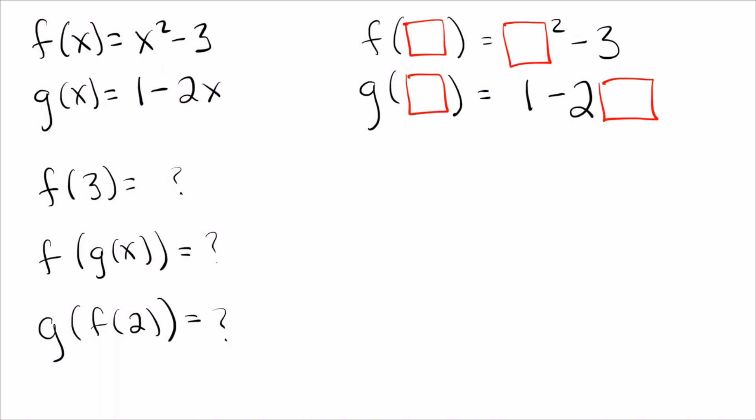And the point is, you can put whatever you want in the boxes. So for example, on the left here, for f, we had put x in the boxes. And that's why f of x equals x squared minus 3. Or similarly for g, we had put x in the box. That's why g of x equaled 1 minus 2x. But there's no reason we have to put x in the box. You can put whatever you want in there.